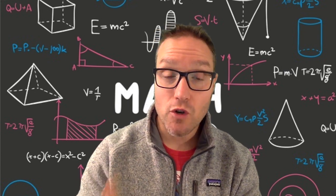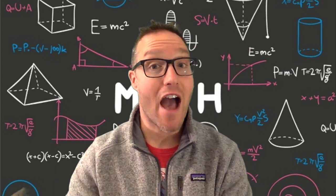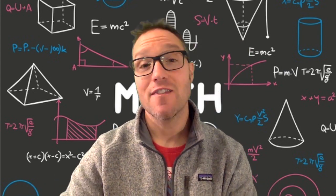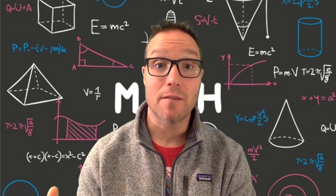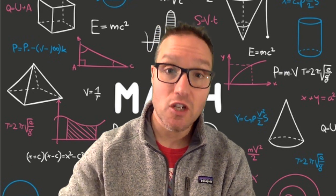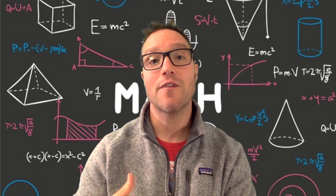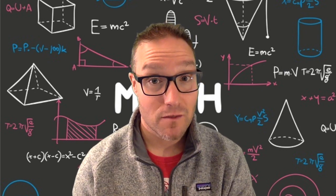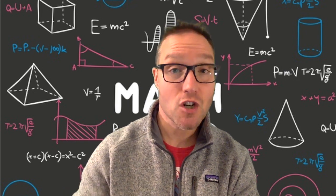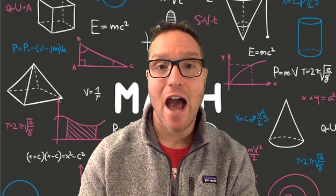Number seven is make sure you know the difference between average rate of change and average value and don't confuse them. So if they ask you for the average rate of change, that's simply the slope from a to b. So that's f of b minus f of a over b minus a, change in y over change in x. That's average rate of change of f of x. If they want the average value of f of x, then you're going to do one over b minus a times the integral from a to b of f of x dx. So that is the average value.